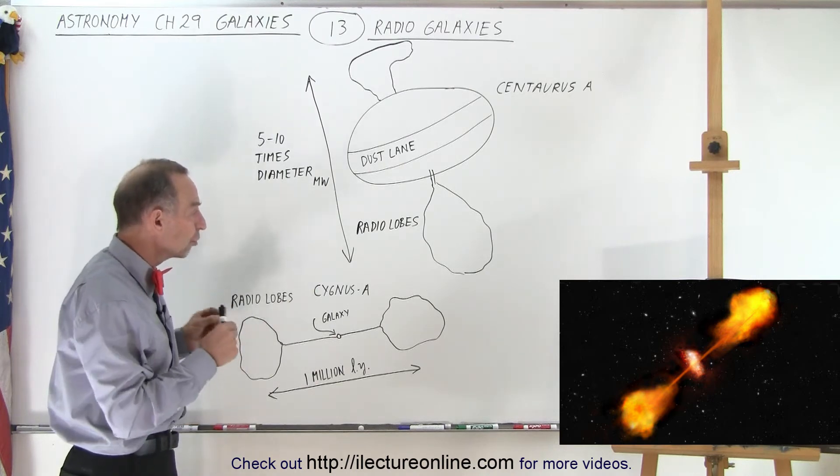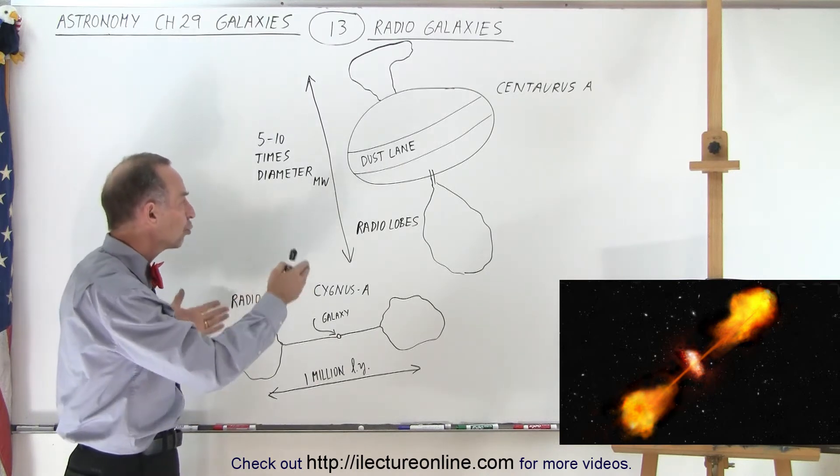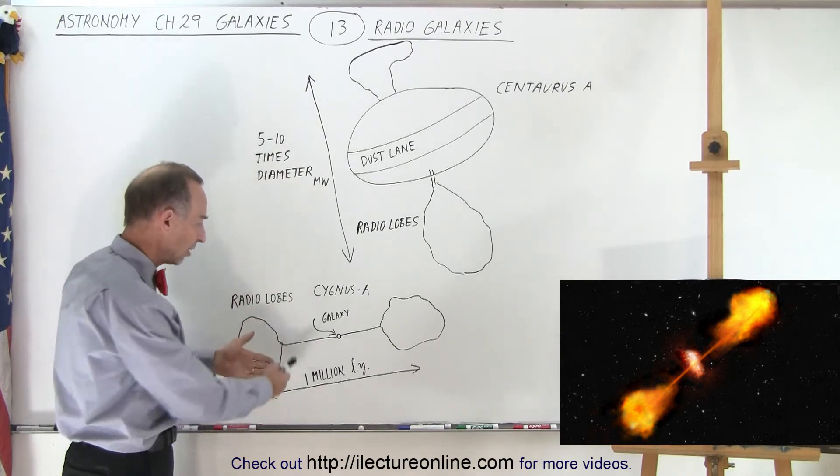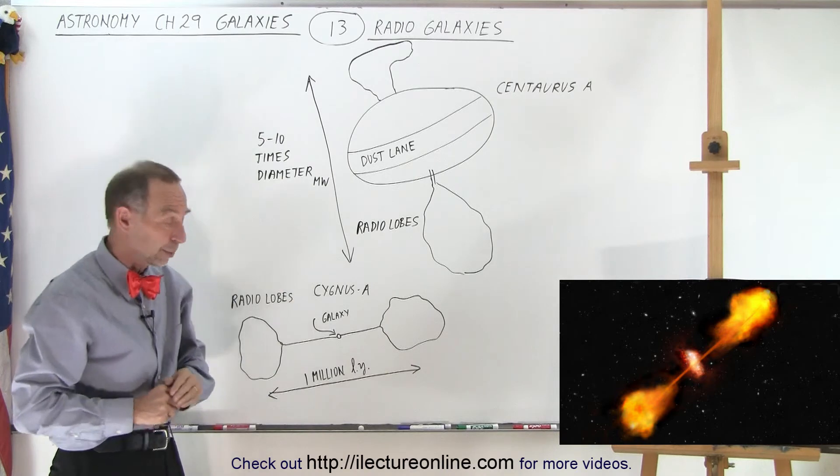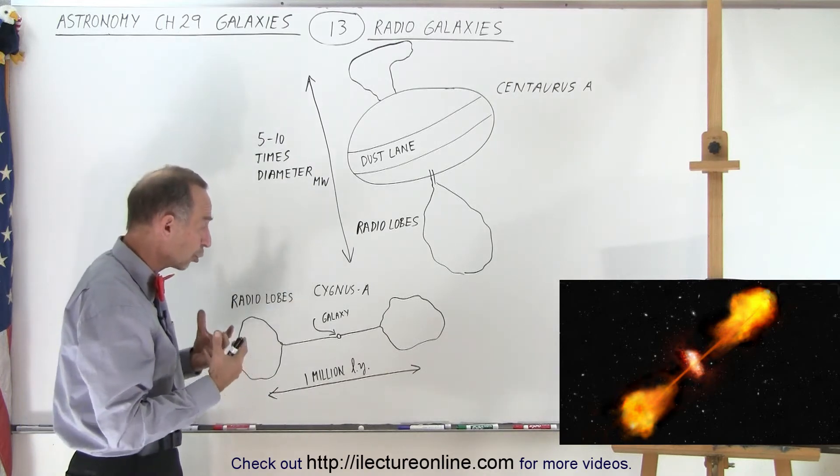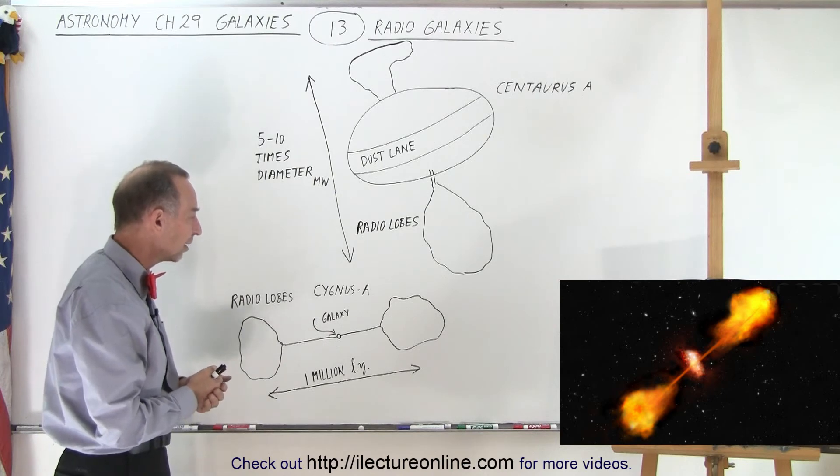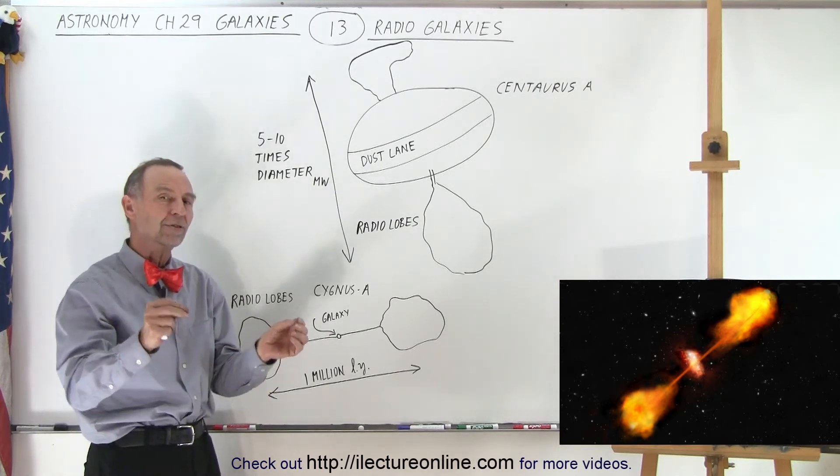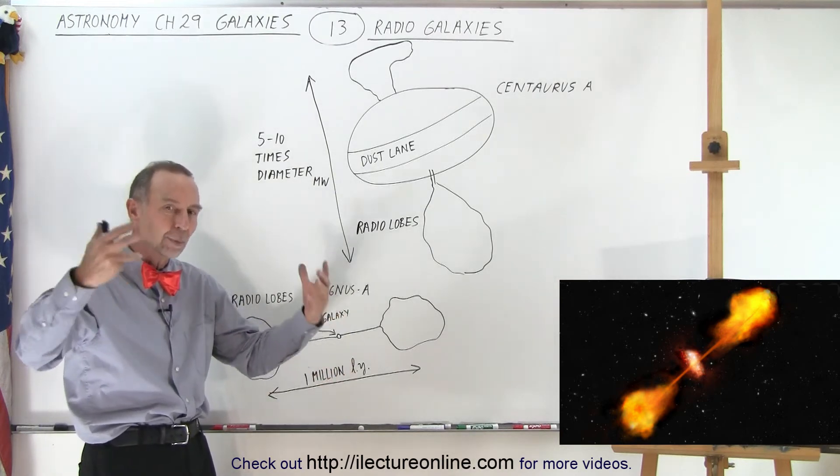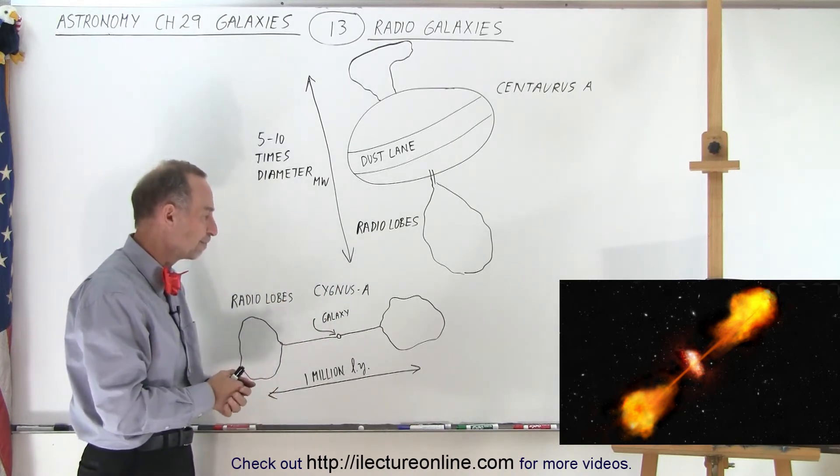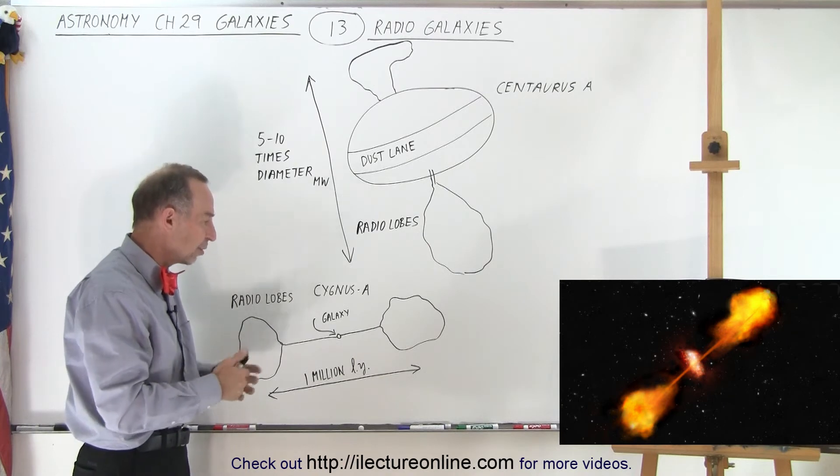But what's unusual about these is that we have these huge radio lobes on both ends, sometimes as much as five to ten times the diameter of the Milky Way apart. These are huge structures far away from the regions of the galaxy itself, and it takes that long for the particles to slow down and begin to form these radio lobes where radio radiation is being emitted by that whirling mass of material.